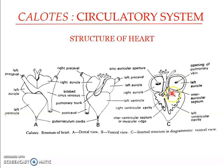Both auricles open into the ventricle through right and left auricular ventricular apertures. The left auricle opens through the left auriculo-ventricular aperture into the cavum dorsale portion, while the right auricle opens through the right auriculo-ventricular aperture into the cavum pulmonale portion. These apertures are guarded by auriculo-ventricular valves, whose flaps are attached to the columnae carneae by thread-like muscles called chordae tendineae.